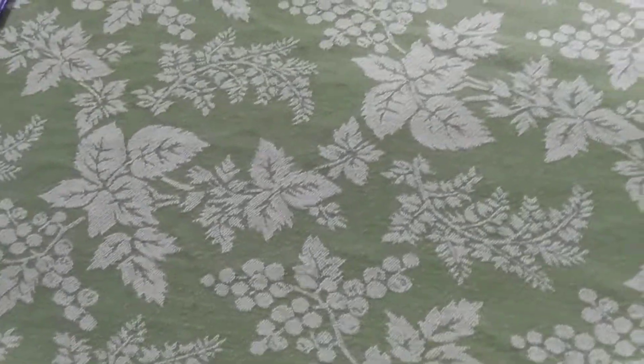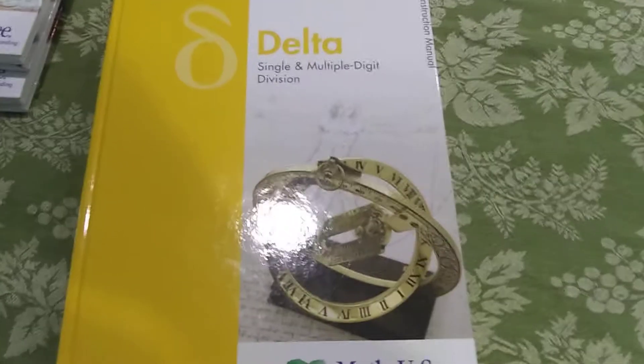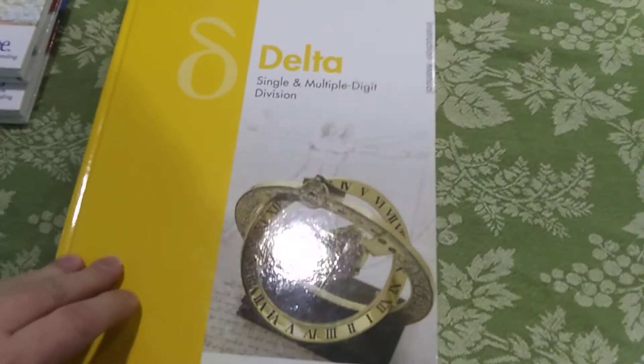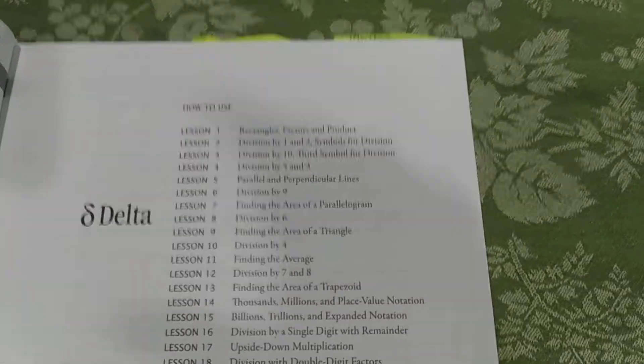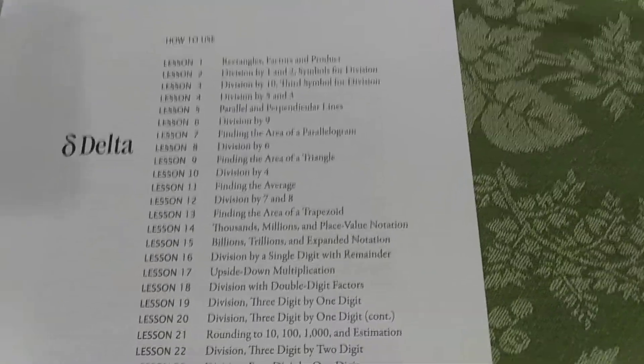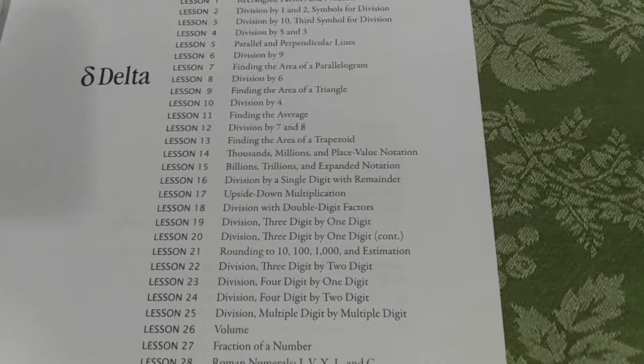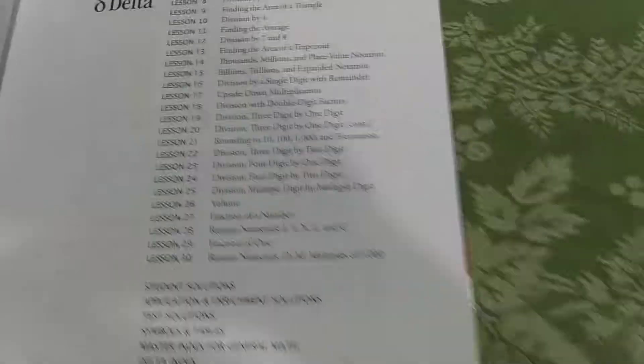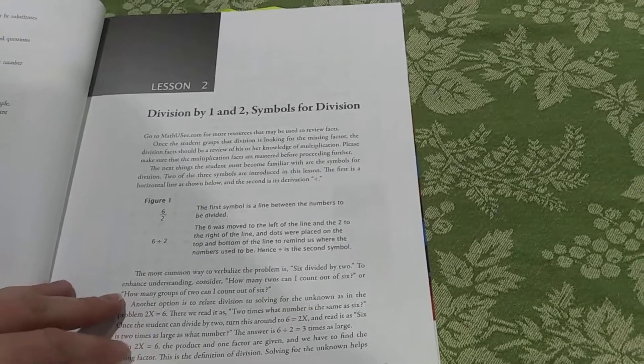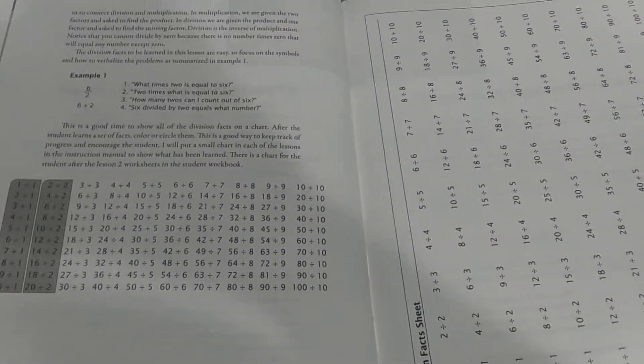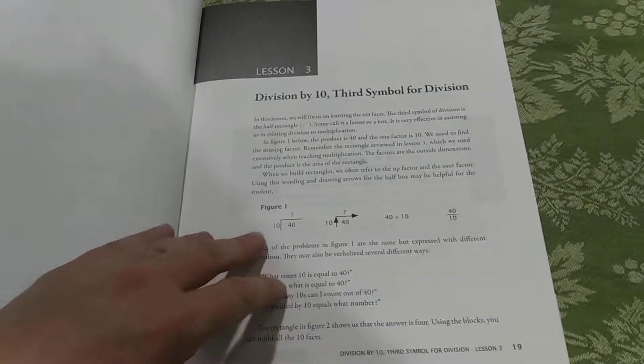And the next level is Delta. Single multiple digit division. Math-U-See is mastery-based. It's not a spiral math. So they can take it as slow as they need to until they get the concept. I love it that it starts out so simple. So division by ones and twos. It's got charts in here that you can check off. They use the blocks to explain division to you.